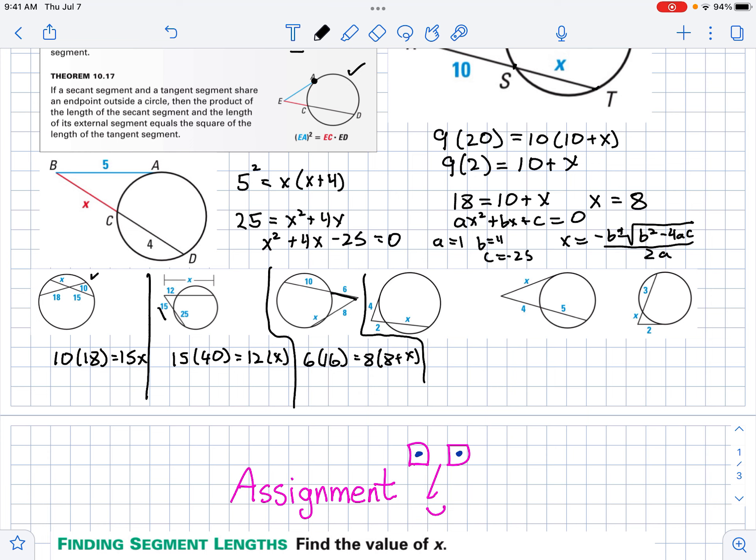This next one, it's a tangent there, so it's 4 squared equals 2 times 2 plus X. The next one, you've got X squared equals 4 times 9. And then over here you've got 2 squared equals X times 3 plus X. That's the way they go.